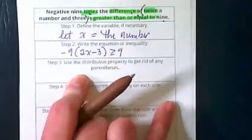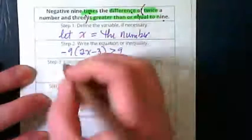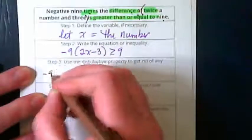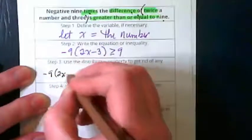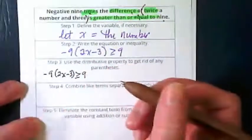Step 3 says use the distributive property to get rid of any parentheses. So let's write this over here, negative 9 times 2x minus 3 is greater than or equal to 9.